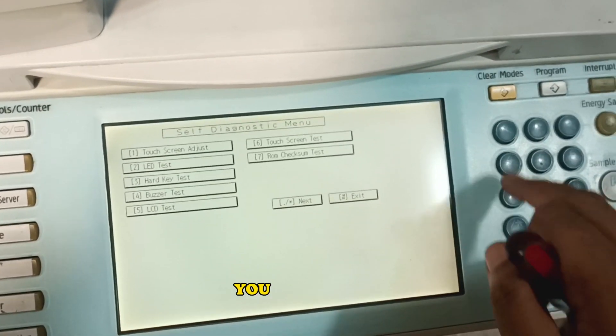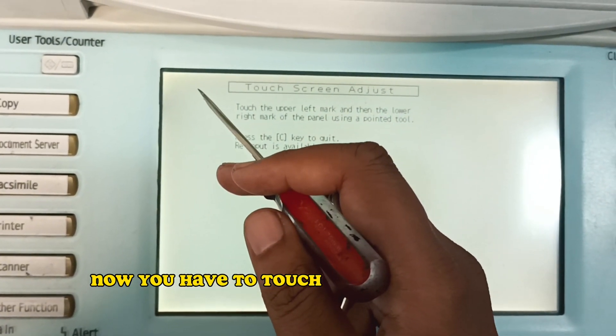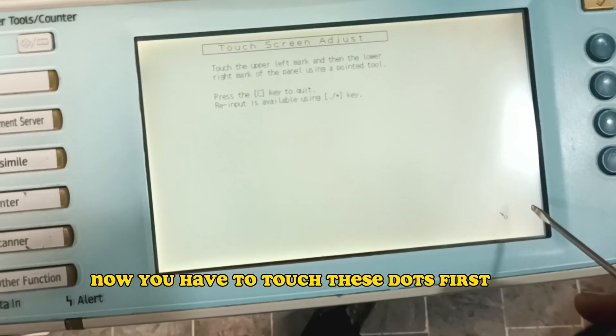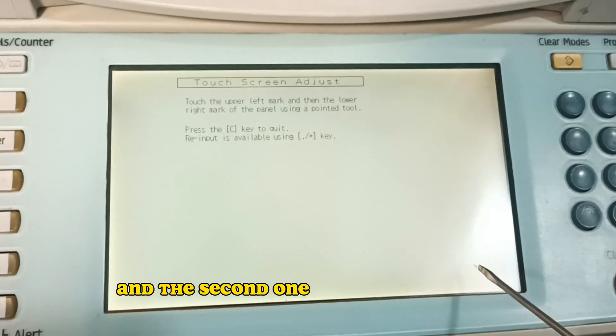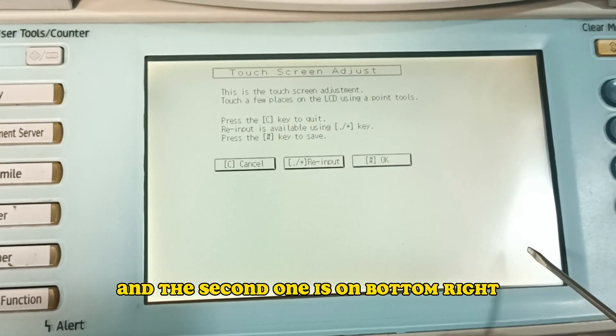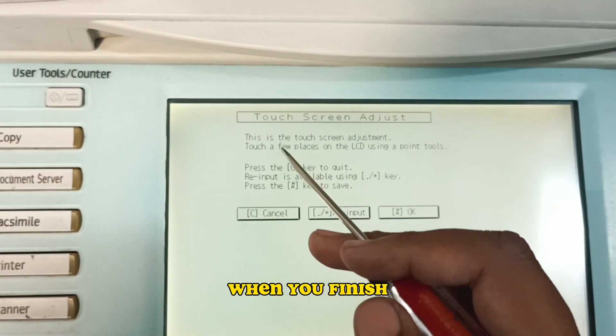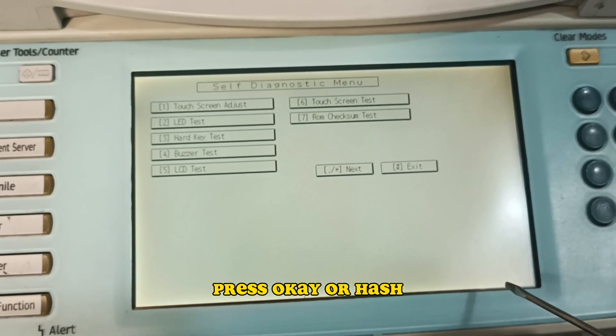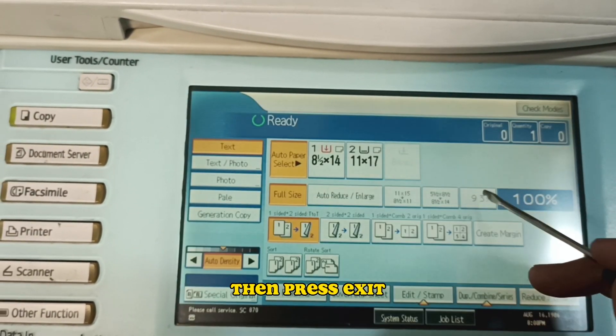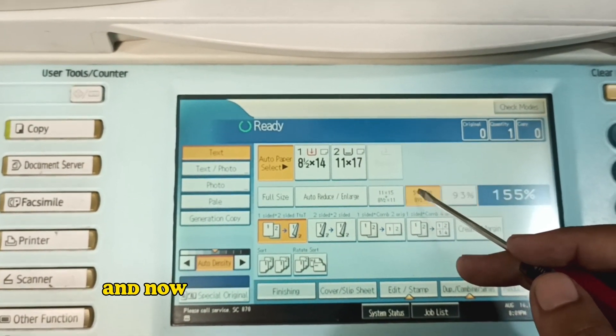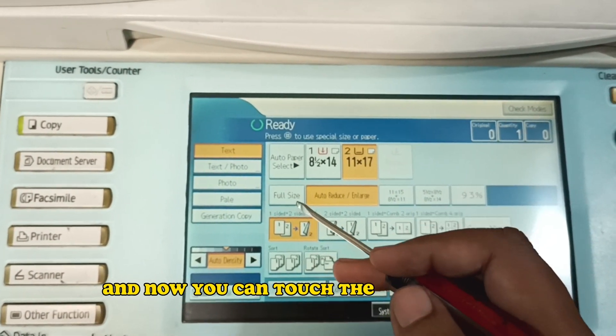Now you have to touch these dots, first on left and the second one is on bottom right. When you finish, press OK or hash, then press exit. And now you can touch the screen easily. The function you need to select is easily selected. Now the touch is working fine.